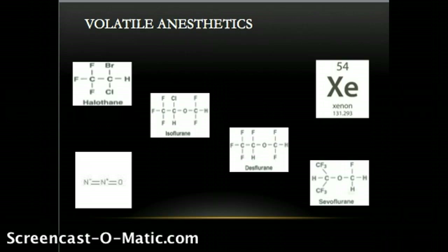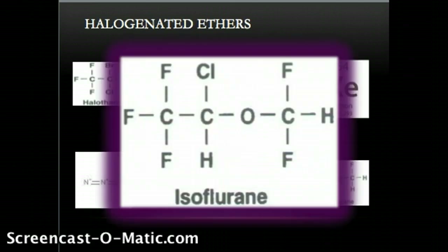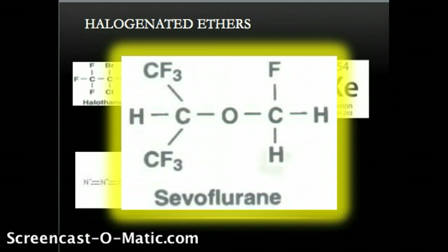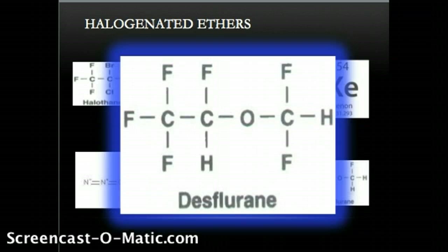Volatile anesthetics currently in use may be classified into three basic categories. Note the color coding. Halogenated ethers include isoflurane, a fluorinated methyl ethyl ether; sevoflurane, a fluorinated methyl isopropyl ether; and desflurane, also a fluorinated methyl ethyl ether, which varies from isoflurane by the replacement of a chloride ion with a fluoride ion.